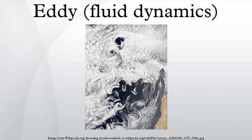When the ocean contains a sea surface height gradient this creates a jet or current, such as the Antarctic Circumpolar Current. This current is part of a baroclinically unstable system that meanders and creates eddies. These types of mesoscale eddies have been observed in many major ocean currents, including the Gulf Stream, the Agulhas Current, the Kuroshio Current, and the Antarctic Circumpolar Current, amongst others.